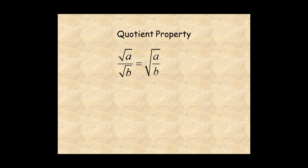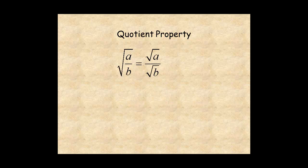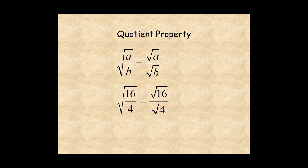To divide and simplify radical expressions, use the quotient property. This property says the quotient of two radicals is the radical of the quotient. For example, radical 16 over radical 4 is equal to radical 16 over 4, which simplifies to 2. It also works the other way: the radical of a quotient is the quotient of the radicals. For example, radical 16 over 4 equals radical 16 over radical 4, which simplifies to 2.